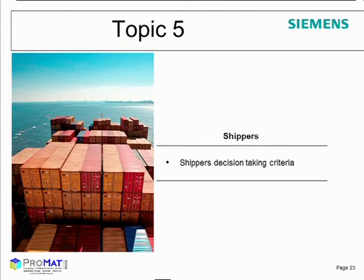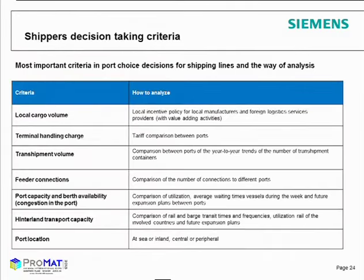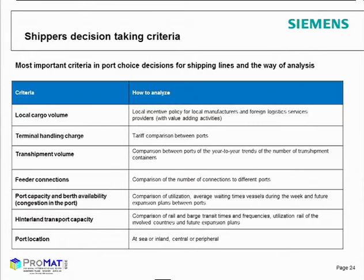Factors which affect shipping companies' port choice include the costs of terminal handling charges, which is one of the most important factors for shipping lines. Also important are the number of services offered at different ports like feeder connections, productivity at the terminal such as vessel waiting times, expansion plans at a port for the long term until 2020 or 2035, and services in the hinterland. Based on these factors, they decide whether to sign a contract with a terminal for five or six years.